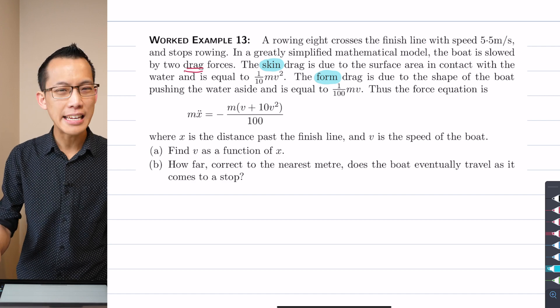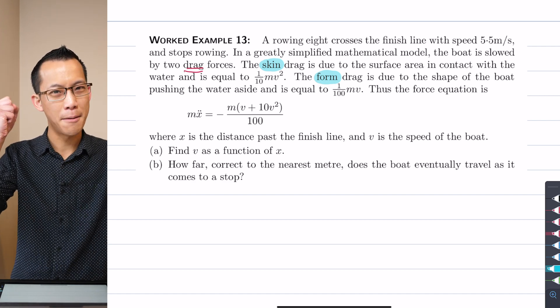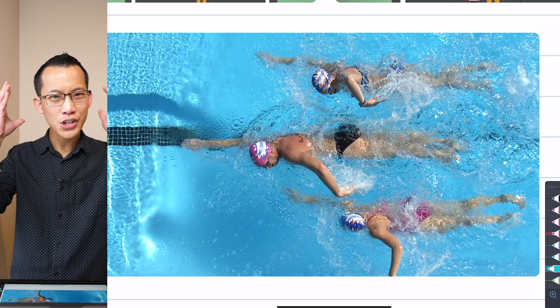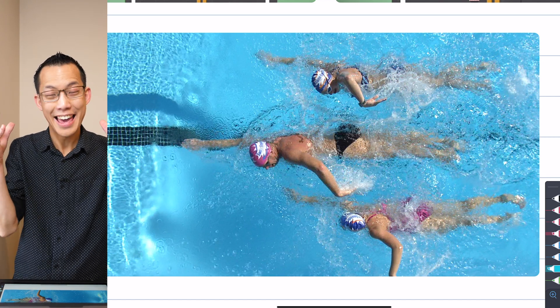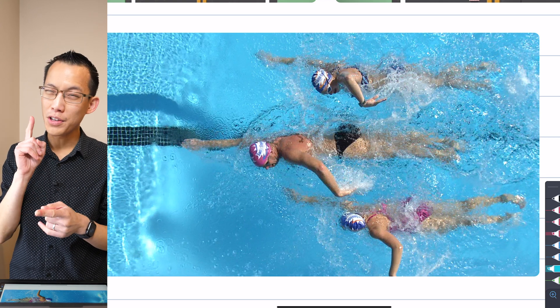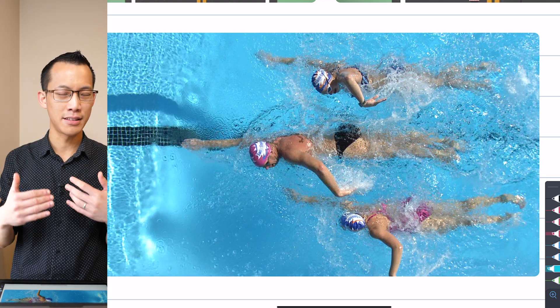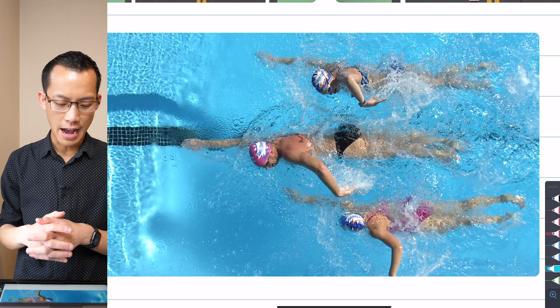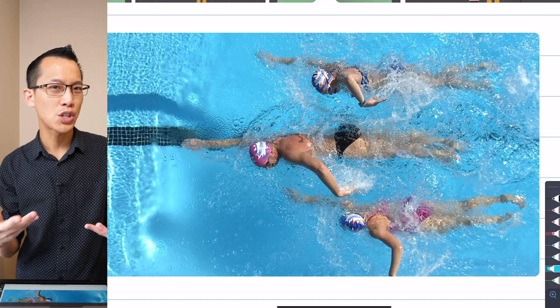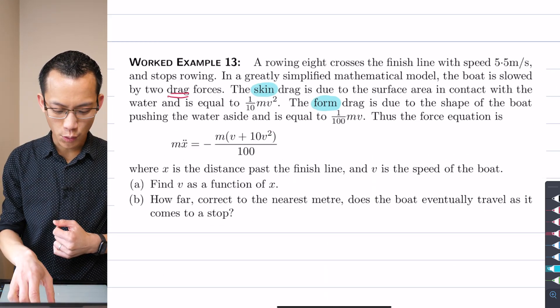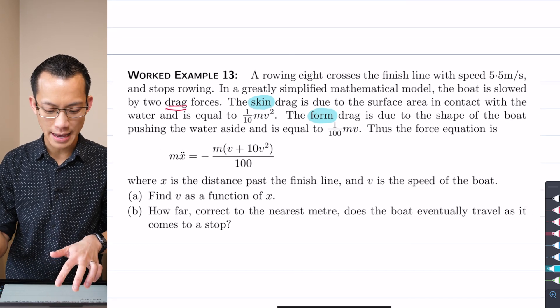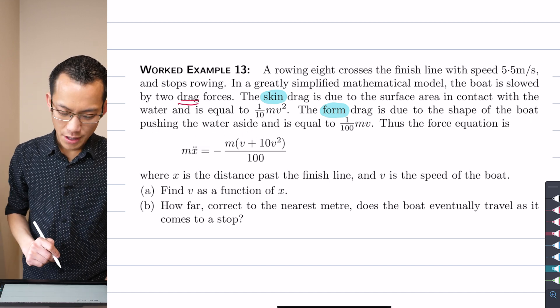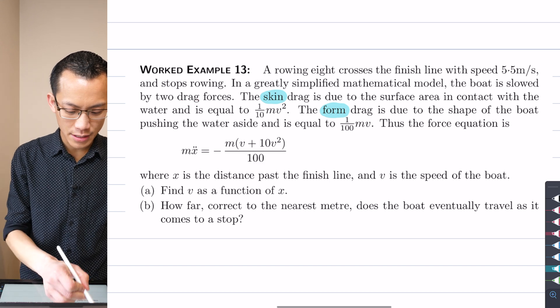The analogy that was given to me once is skin drag is the thing we're trying to reduce by putting on a swimming cap. So if you put a swimming cap over a swimmer's head, and we've got some swimming caps right here, you don't change the shape of the head that you're swimming through the water, but what you do change is the actual surface that's going through the water, namely hair versus this plastic, latex, that kind of thing, which is much smoother. So it would experience less skin drag, so less resistance. Whereas, you've also got form drag, which comes from, as the question says, the shape of the boat pushing the water aside.